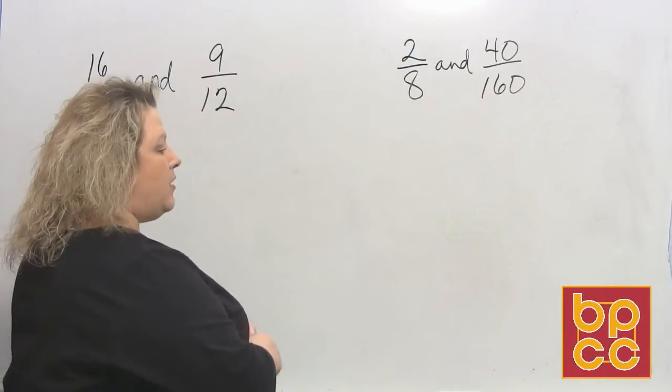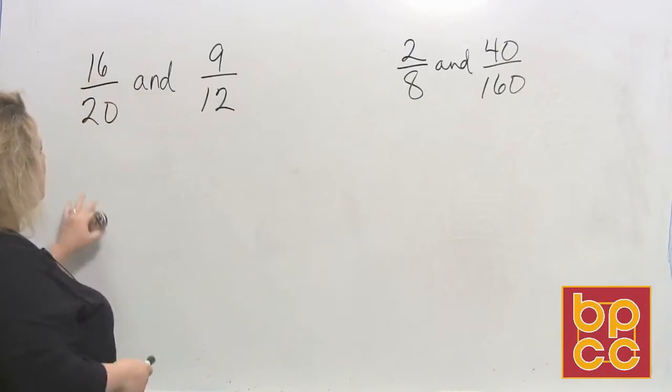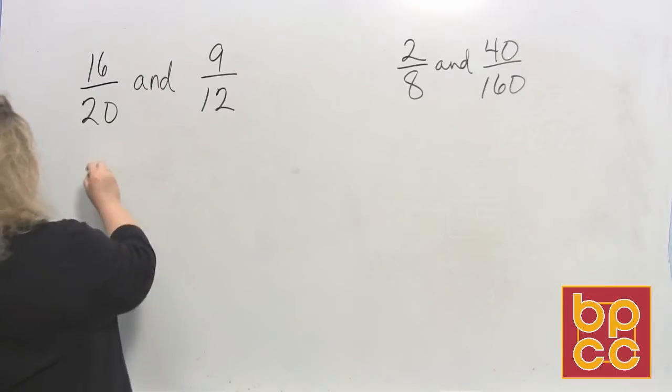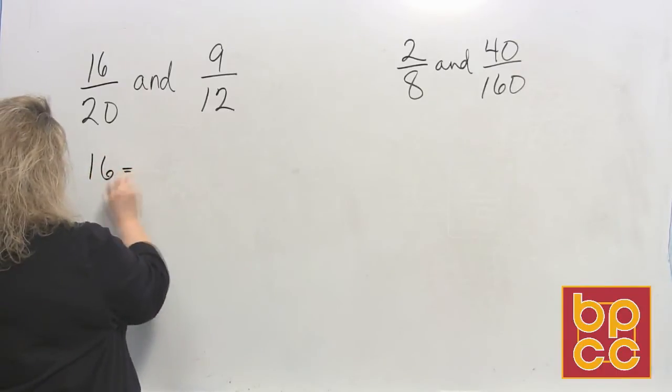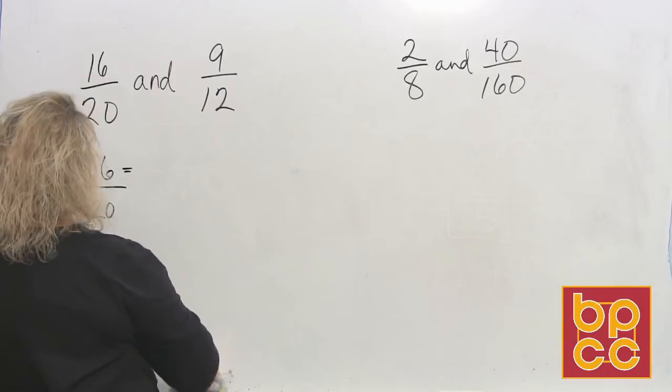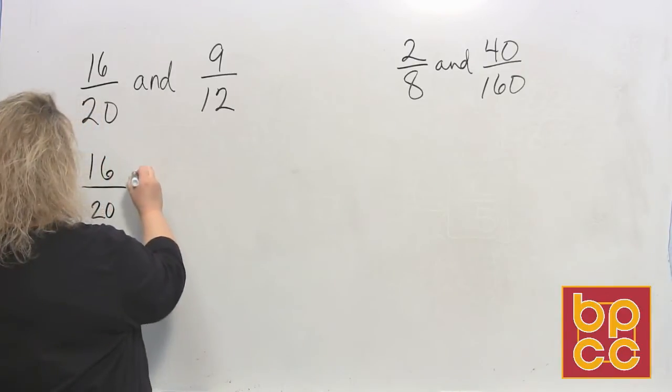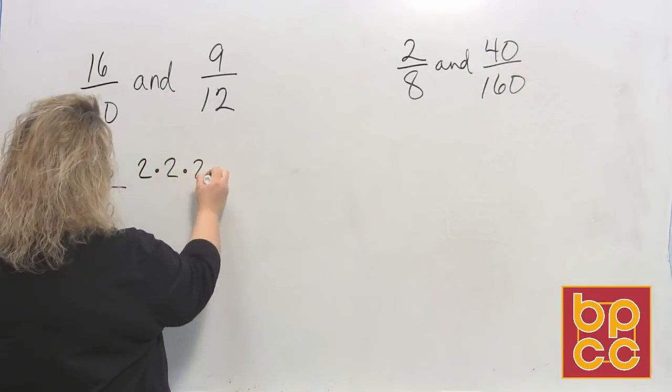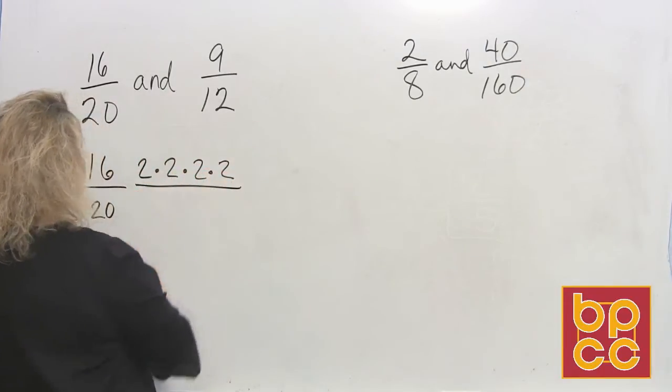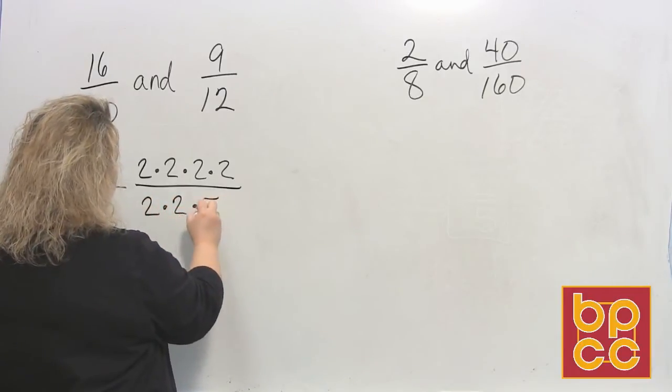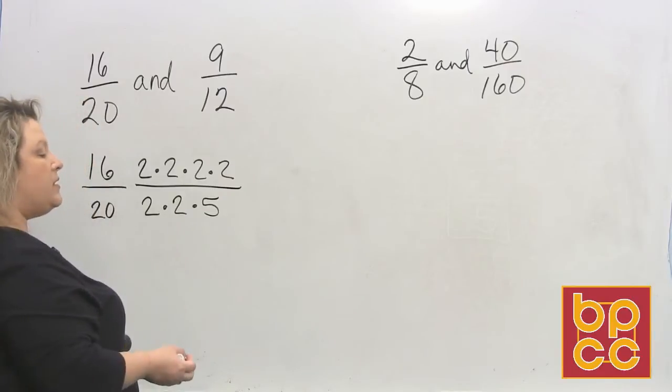So in the previous lesson, we talked about simplifying fractions to lowest terms. So we have the fraction 16 over 20 and we want to reduce that to lowest terms. If you reduce that 16 over 20, the prime factorization for 16, when you work that out, that would be 4 groups of 2 and 20 is 4 times 5. So that would be 2 groups of 2 and a 5.